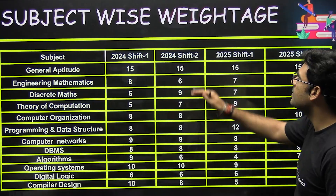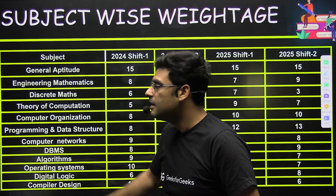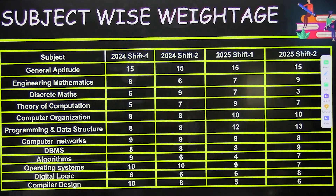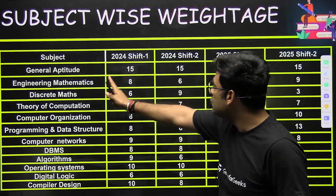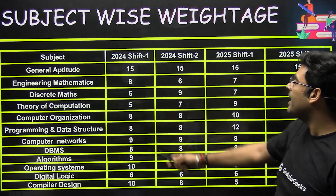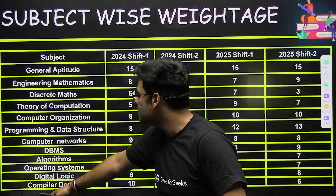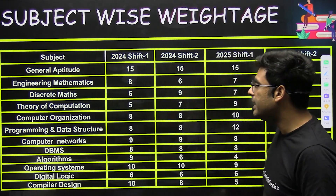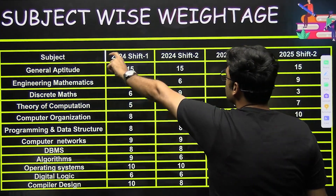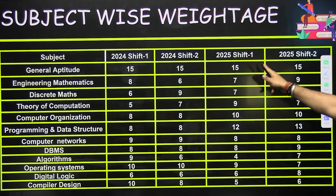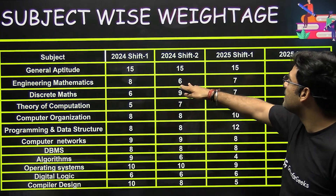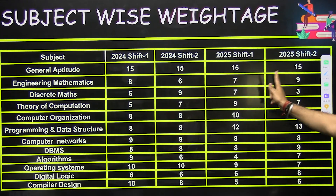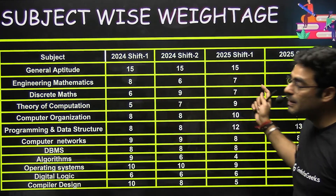Here is a subject-wise weightage planner for CSC. For 2024 and 2025, shift 1 and shift 2 respectively, aptitude carries 15 marks — that is certain. Engineering mathematics is also important: in 2024 it was 8 marks and 6 marks for shifts 1 and 2, and for 2025 it was 7 and 9 marks. So mathematics plays a very important role.